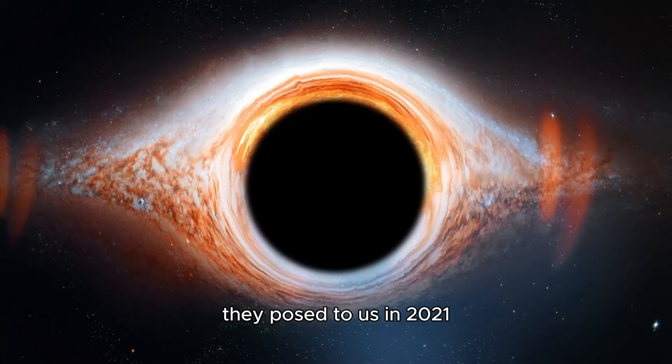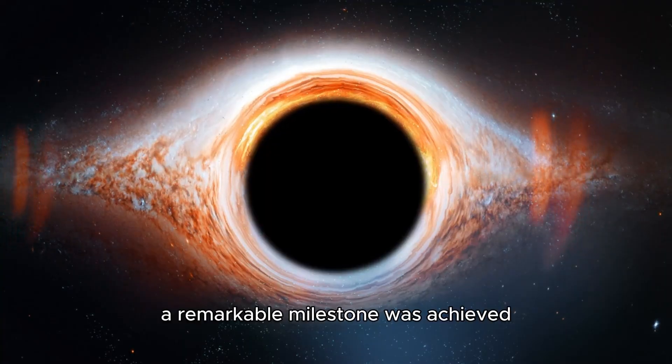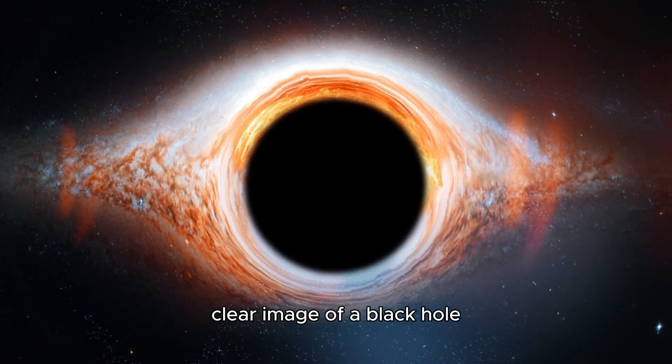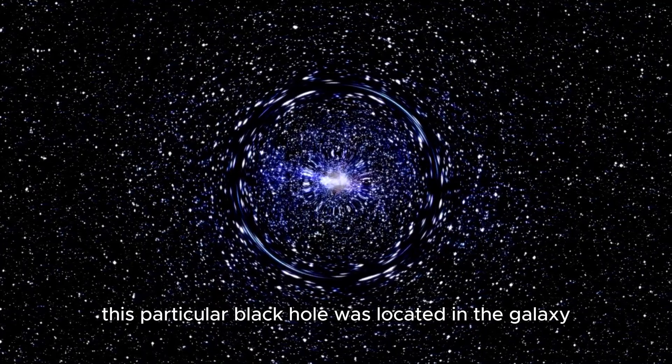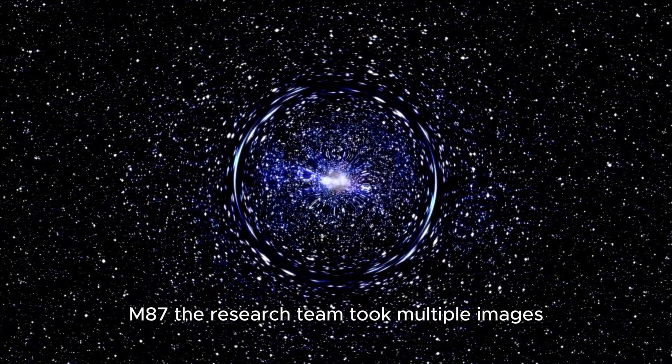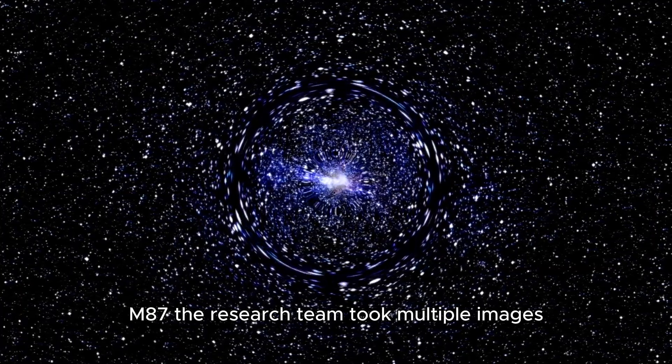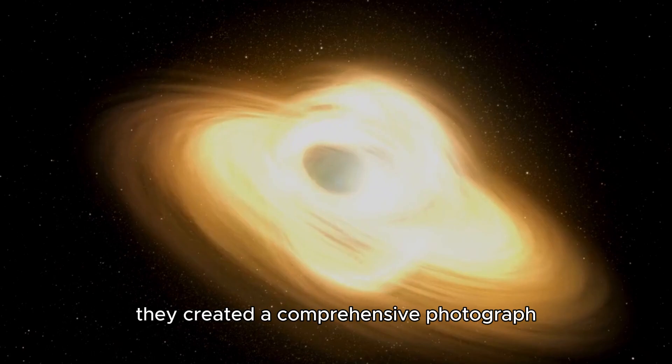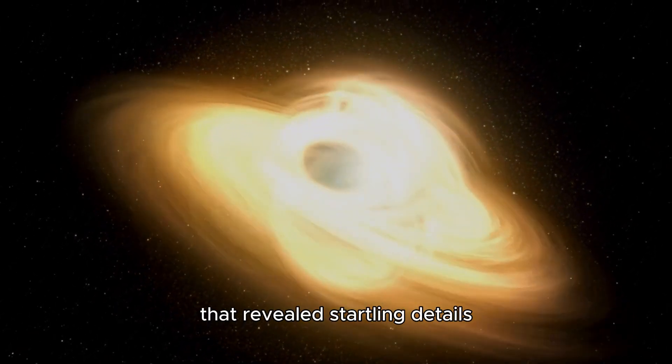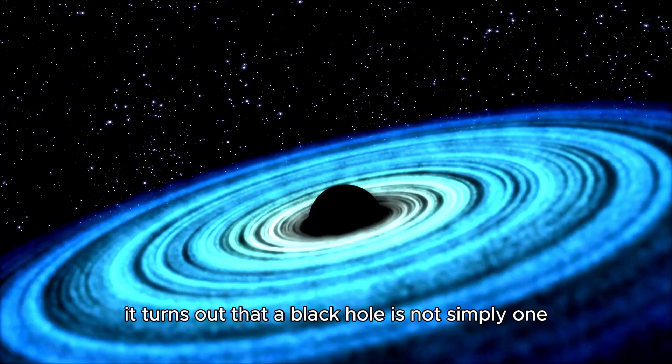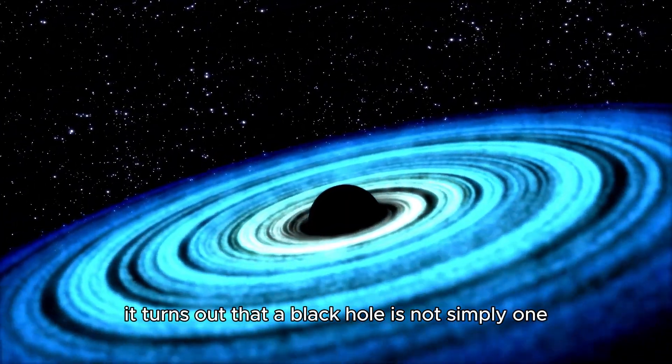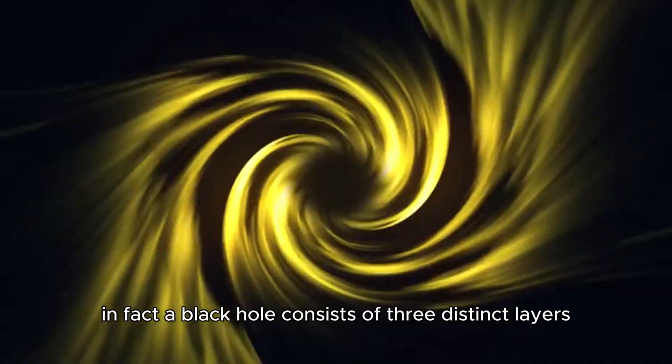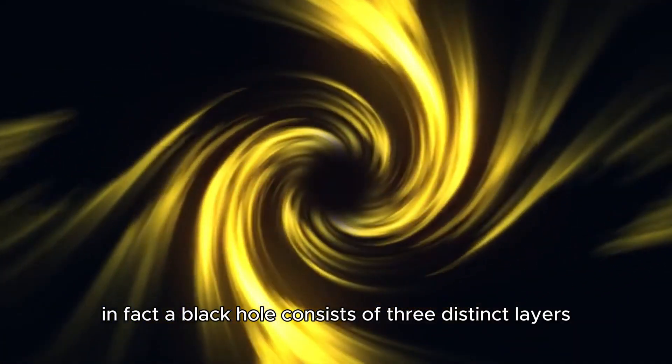In 2021, a remarkable milestone was achieved when scientists successfully captured the first clear image of a black hole. This particular black hole was located in the galaxy M87. The research team took multiple images over several nights, and by stitching these images together, they created a comprehensive photograph that revealed startling details. It turns out that a black hole is not simply one giant void of nothingness, as many people might think.